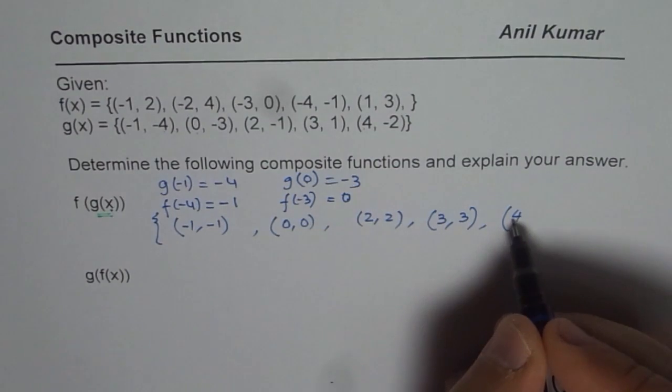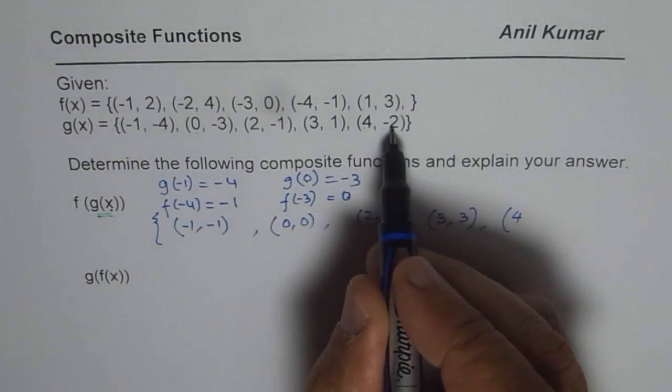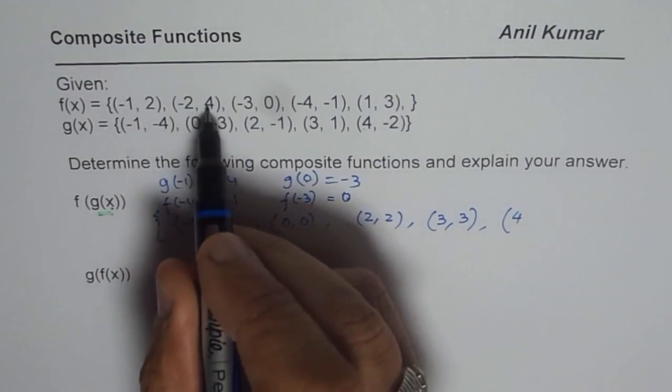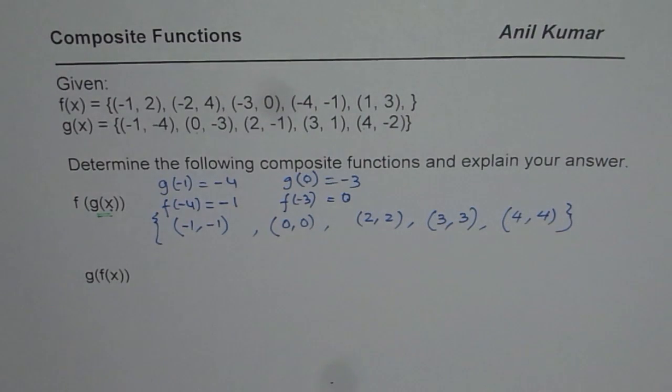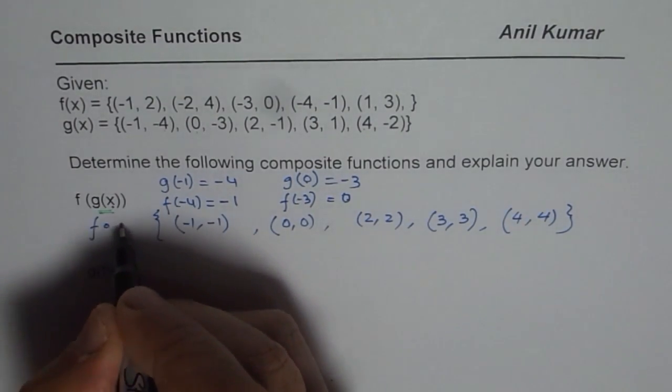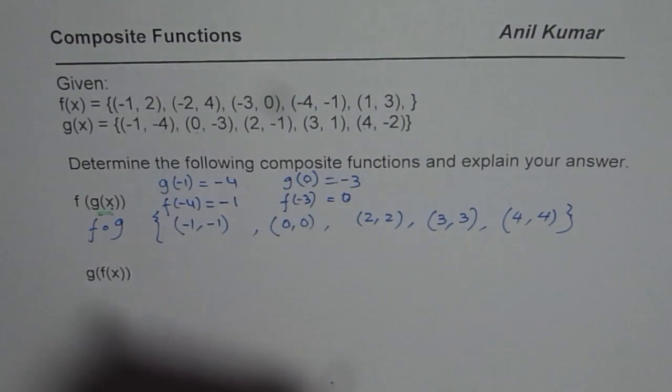And then 4 is the input. For 4 input, g of 4 is minus 2. What is f of minus 2? f of minus 2 is also 4. So we get the point (4, 4), and that completes the set. So this is f(g(x)).